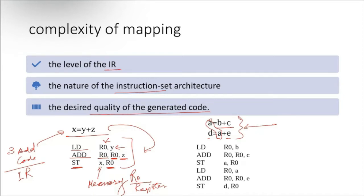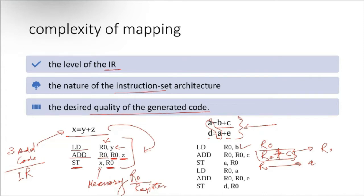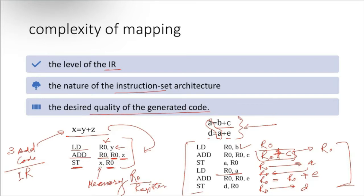Load B first — B is loaded to R0. Then do R0 plus C and store this value to R0 itself. Then send the value of R0 to memory location A. Then bring back the value of A to R0. This is how, if we have three-address codes, we can easily convert them to something like assembly-language code.